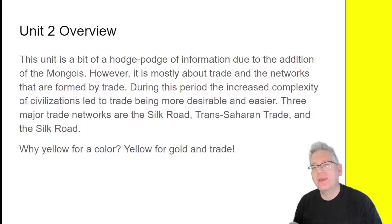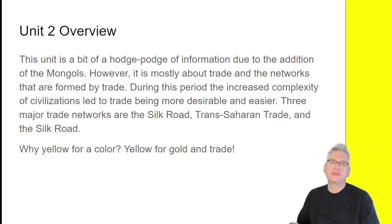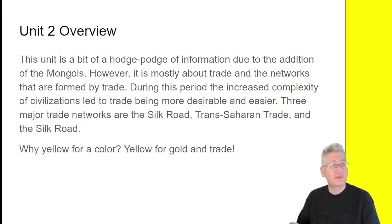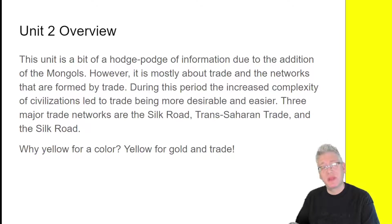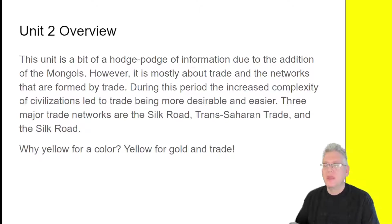This unit is kind of a hodgepodge of information due to the addition of the Mongols. It's called 'Networks of Trade,' so it's going to talk about all these trade networks, but also it's kind of like, here's some Mongols. The Mongols do fit in in a big way when it comes to the Silk Road, but by and large it's not like another trade network. It's mostly about trade and the networks formed by trade.